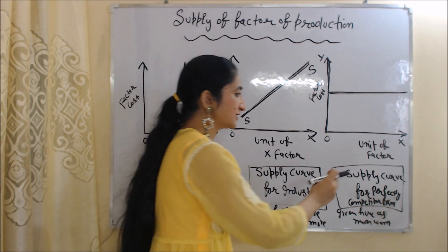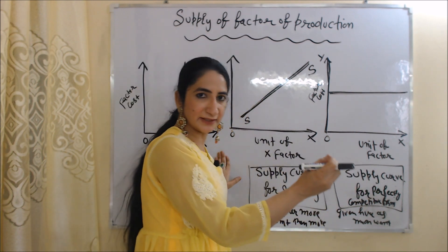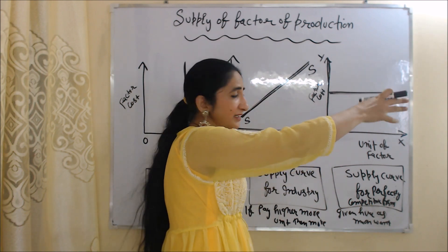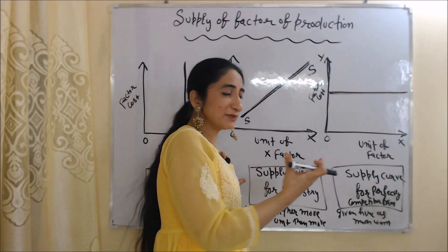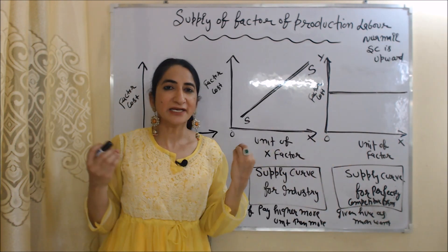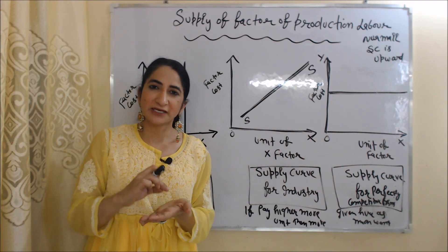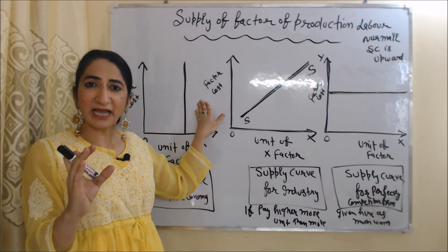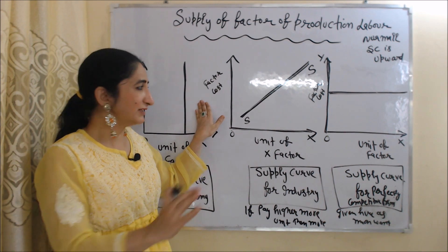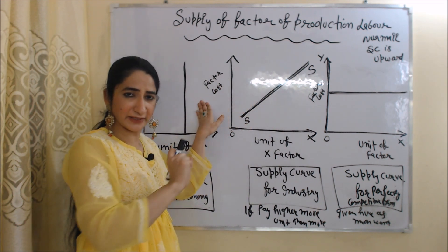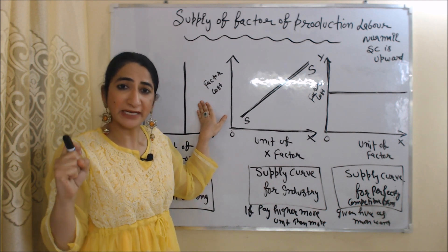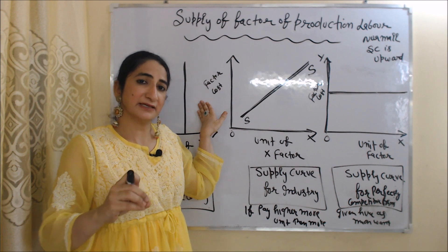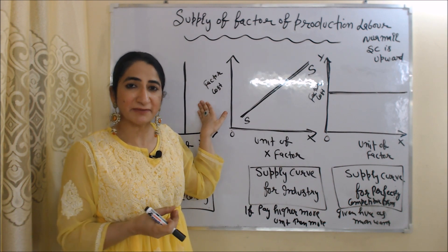The third diagram represents the supply curve for a perfectly competitive firm. The supply curve is perfectly elastic, meaning that at a given price, a firm can hire as many units of the factor as it wants. We have four factors of production: land, labor, capital, and entrepreneurship. Land, capital, and entrepreneurship have these three kinds of supply curves. But in the case of labor, while the slope of the supply curve is normally upward, in many cases the labor supply curve can be backward bending.